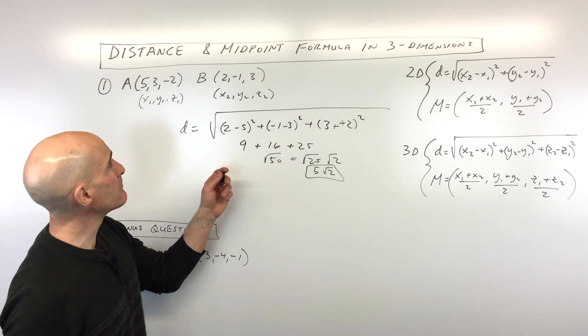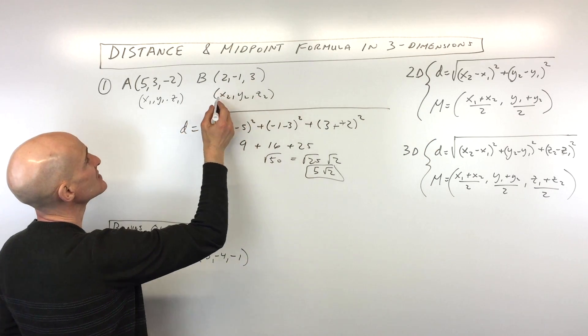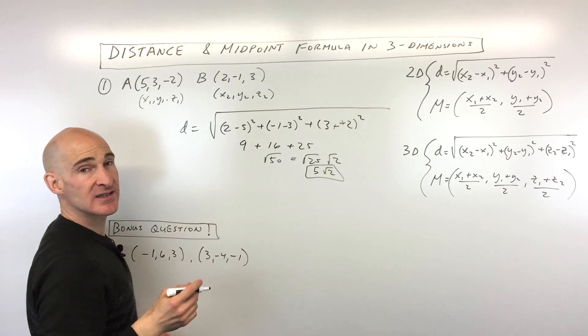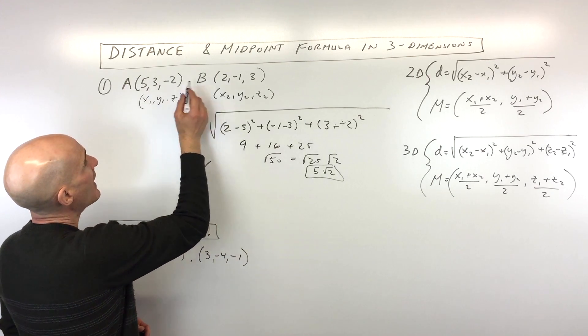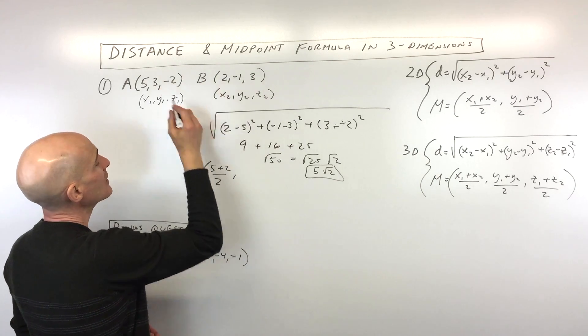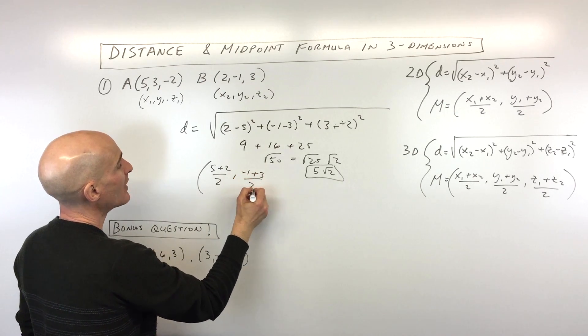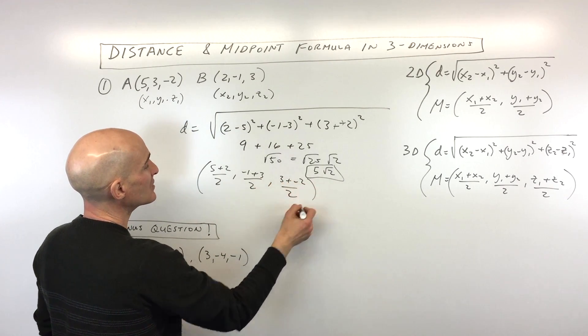Okay, now for the midpoint, same kind of idea. Just like in two dimensions, we're gonna add the x's together and divide by two, y's and z's the same way. So let's go ahead and do that. We've got (5 + 2)/2, (-1 + 3)/2, and (3 + (-2))/2.